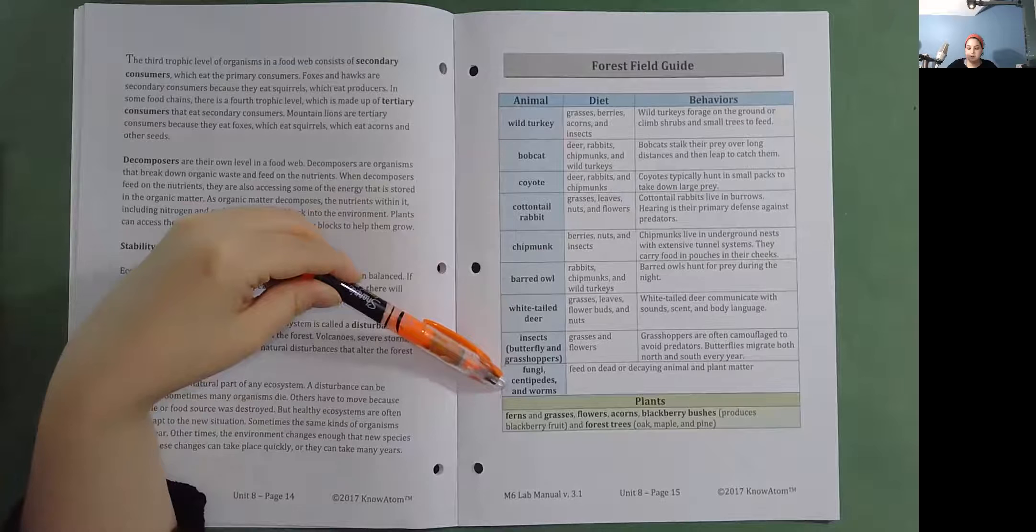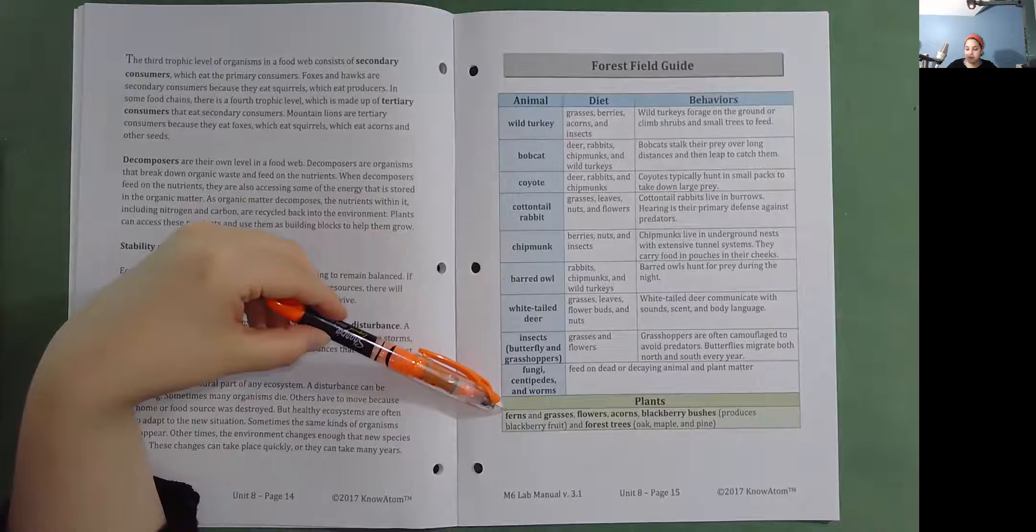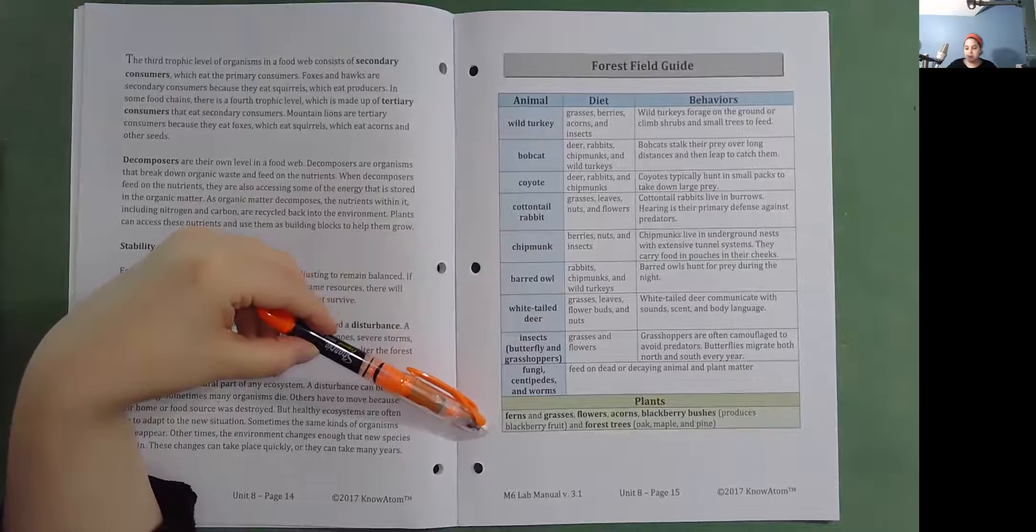Fungi, centipedes, and worms. Feed on dead or decaying animal and plant matter. Plants: Ferns and grasses, flowers, acorns, blackberry bushes produce blackberry fruit. And forest trees: Oak, maple, and pine.